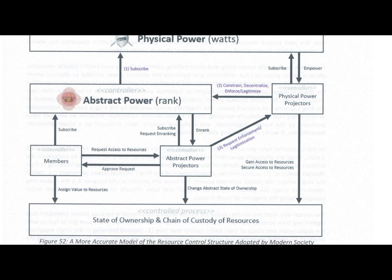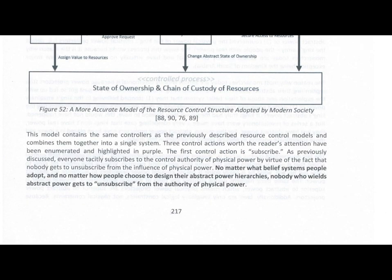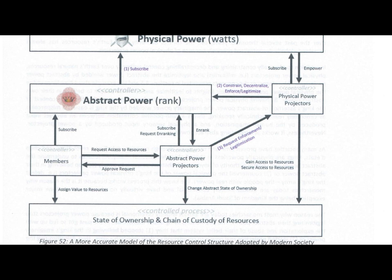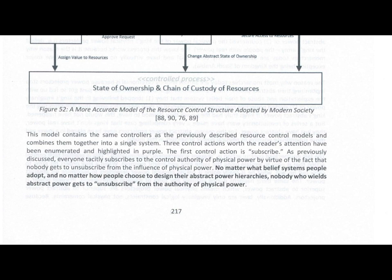Figure 52 is a more accurate model of the resource control structure adopted by modern society. The top controller is physical power, measured in expended watts. This model contains the same controllers as the previously described resource control models and combines them together into a single system. Three control actions worth the reader's attention have been enumerated and highlighted in purple. The first control action is 'subscribe.'